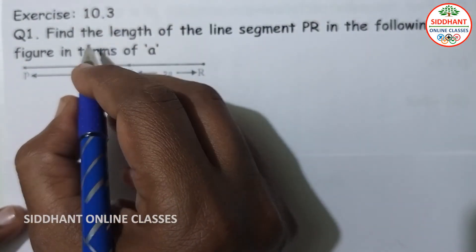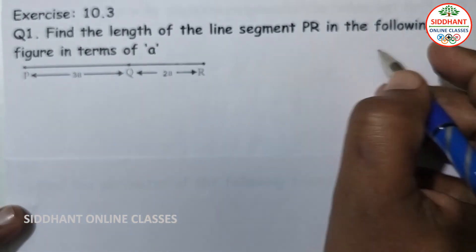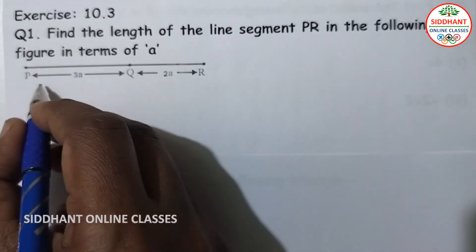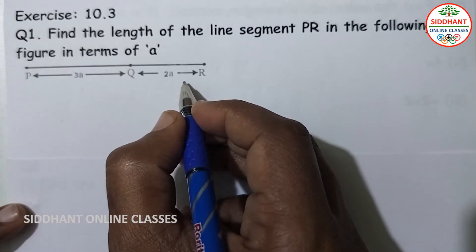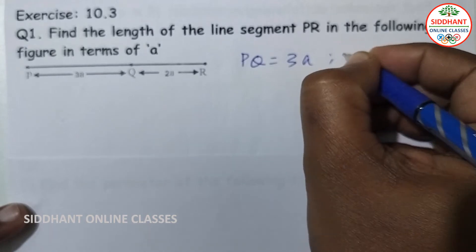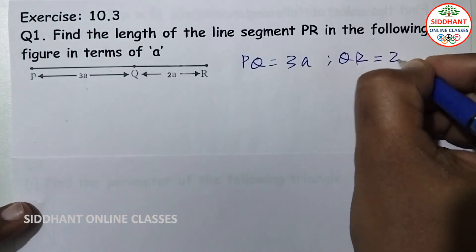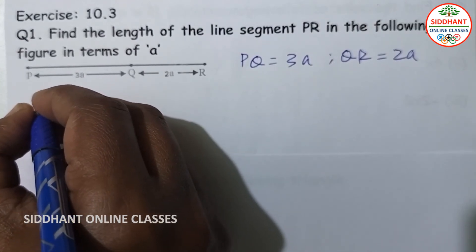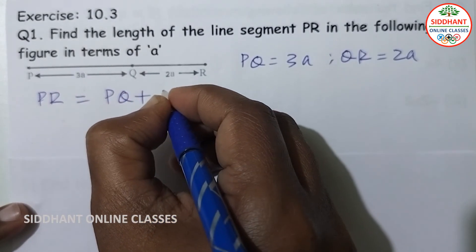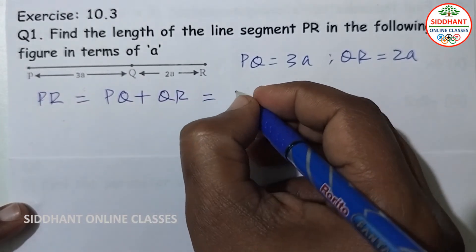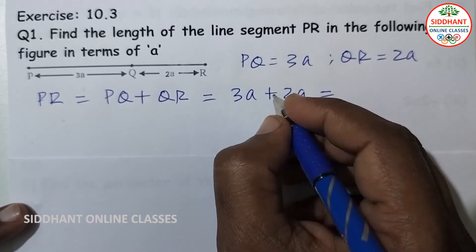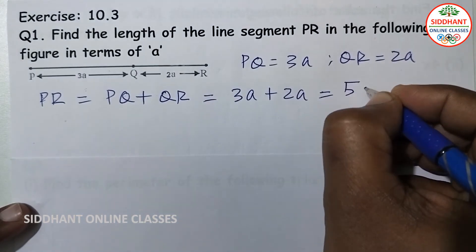Exercise 10.3, question number one: find the length of the line segment PR in the following figure in terms of A. Here PQ is 3A and QR is 2A. We know PR is equal to PQ plus QR, so 3A plus 2A equals 5A.